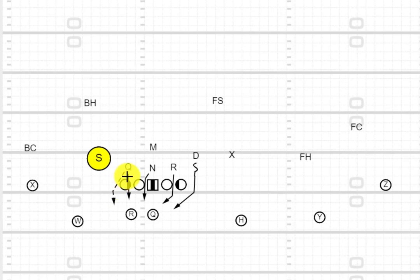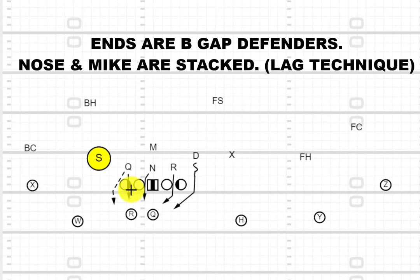What it really means is that you're taking your defensive ends and reducing them down inside into what we call a four-eye technique, or playing shaded on the inside shoulder of the tackle. Your nose is going to align head up on the center, your mike is usually going to be stacked on him — a few different things you can do with him — and your other defensive end will again be in that four-eye technique, shaded on the inside shoulder of the tackle.